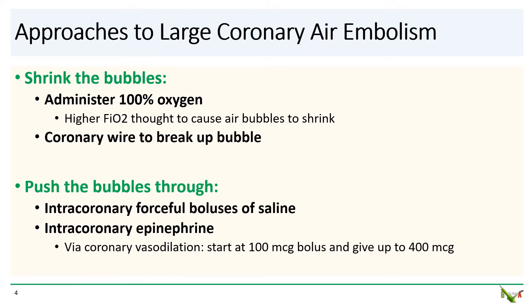So what do we do if we do have a large air embolism? There are several strategies. First, you try to shrink the bubble. This is most commonly done either by giving 100% oxygen or by using a coronary wire to break up the bubble.